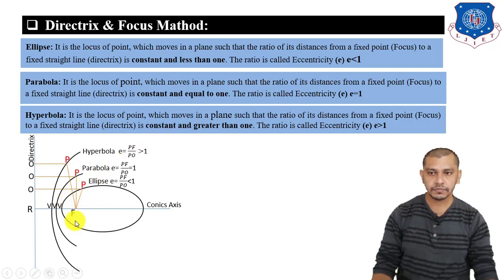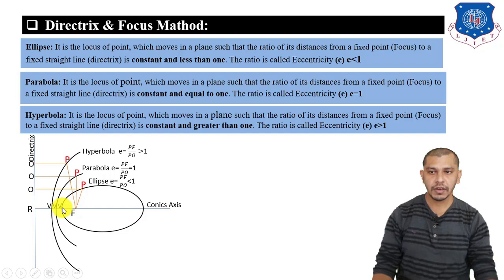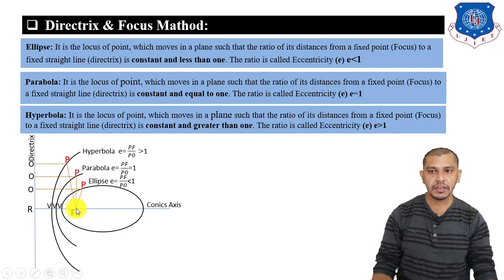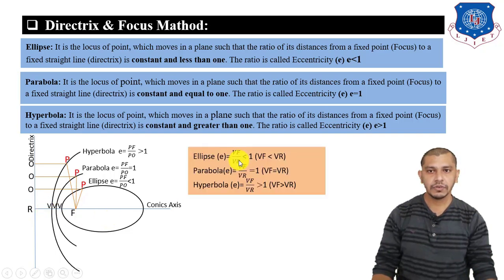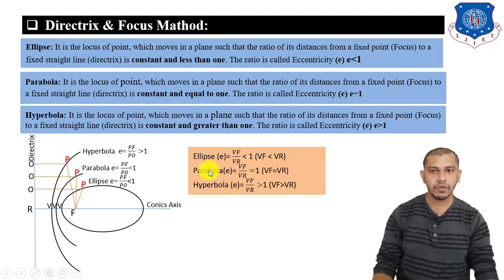When this curve — whether it is an ellipse, parabola, or hyperbola — intersects the conic axis, the point of intersection is known as the vertex point. The eccentricity ratio can also be defined as the ratio of the distance from the fixed point to the vertex (Vf) to the distance from the vertex to the directrix (Vr). This ratio is less than 1 for ellipse, equal to 1 for parabola, and greater than 1 for hyperbola.